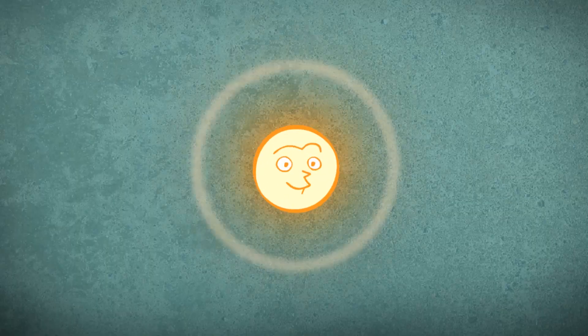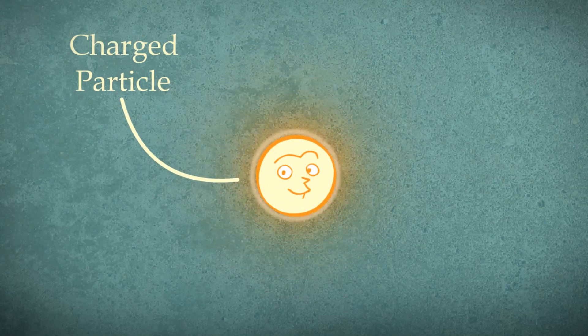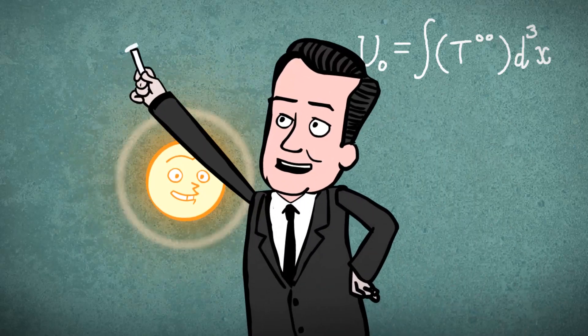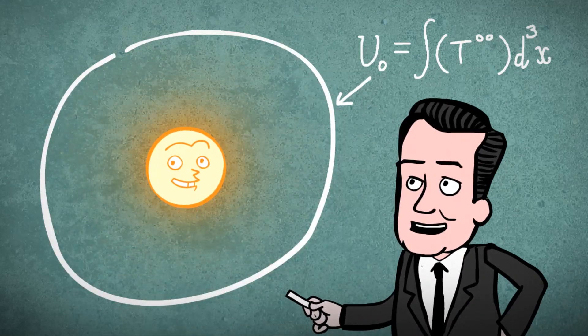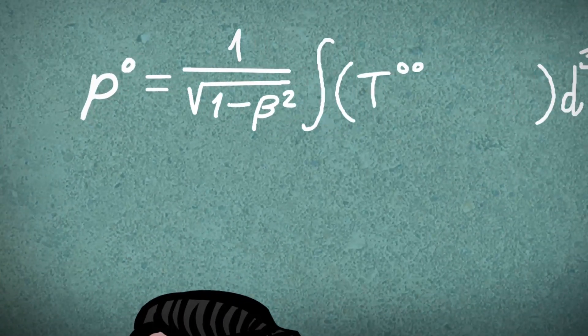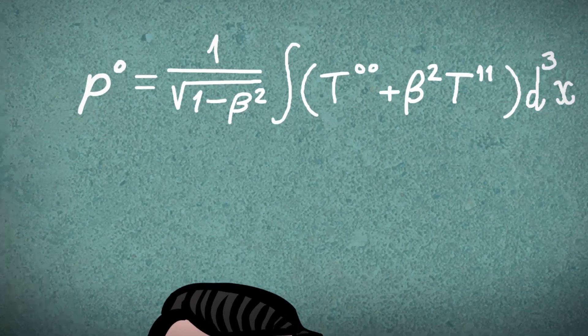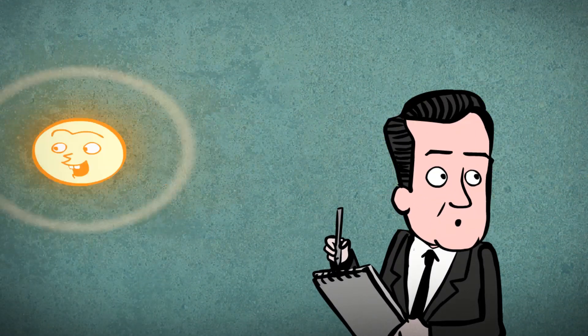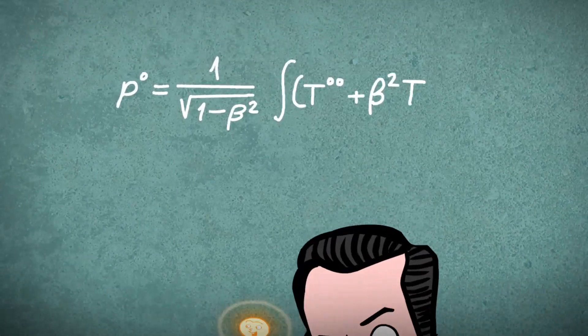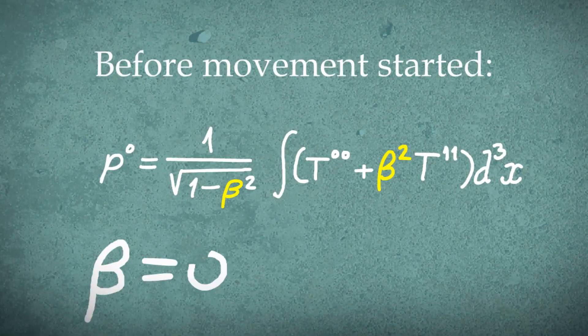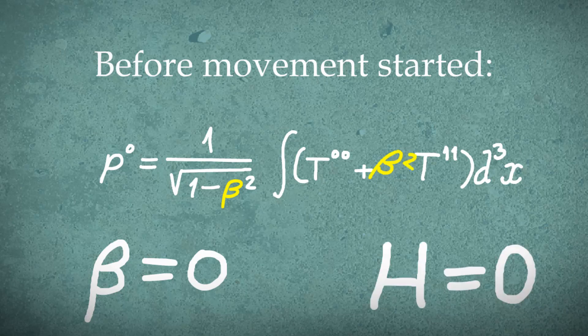When calculating a charged particle's energy and momentum using Minkowski's energy-momentum tensor, the entire energy U0 of the electric field is the integral over the volume surrounding the particle. As long as the particle is not moving, there is no problem. But a paradox arises when trying to calculate the energy and momentum of a moving charged particle. Before movement starts, beta is zero and the magnetic field is null.